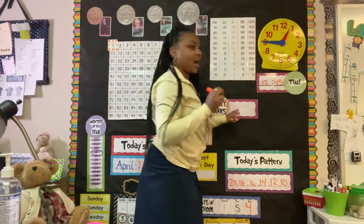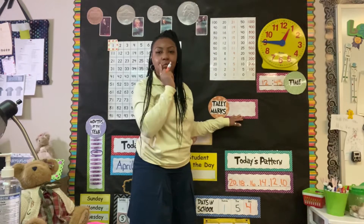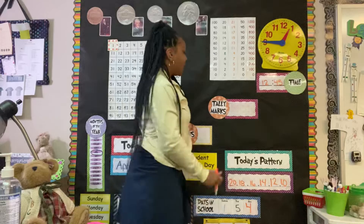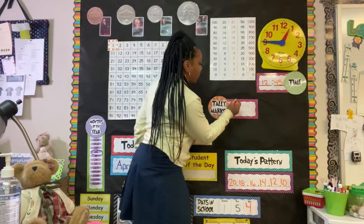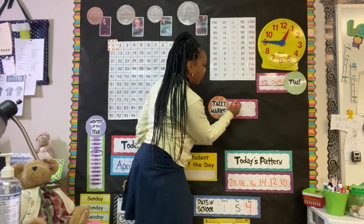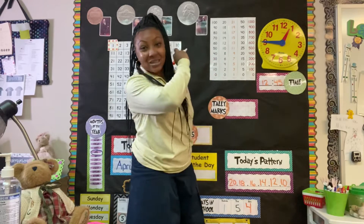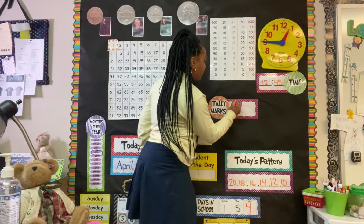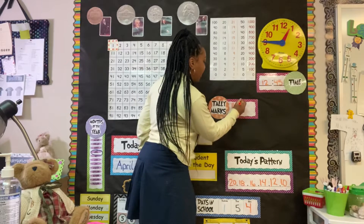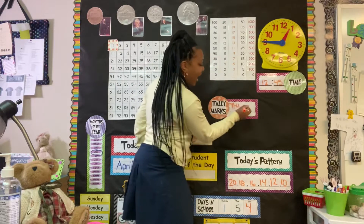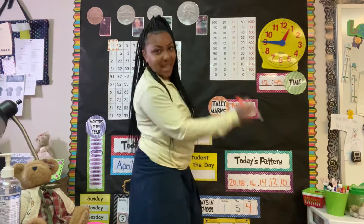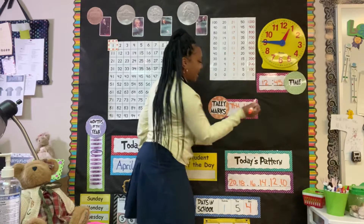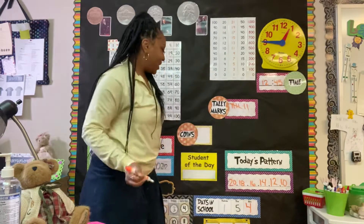And let's do tally marks. Let's go ahead and do seven tally marks. Remember, in the first group of five, that last line is going to slash across. So one, two, three, four, five — and then do a slash — and then six, seven. Good job.